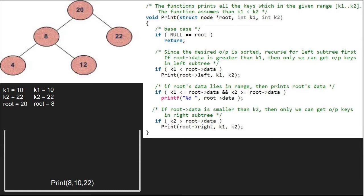Again, as root is not null, we check if k1 is less than root's data. Since it is false, we check if root lies between k1 and k2. As it is false again, we pass the right child of 8 which is 12.